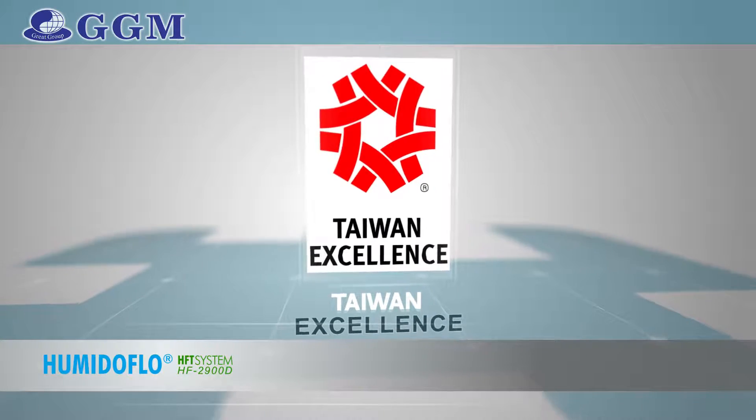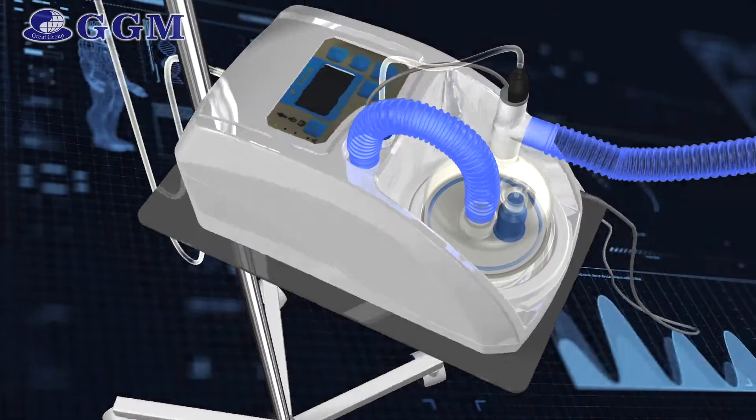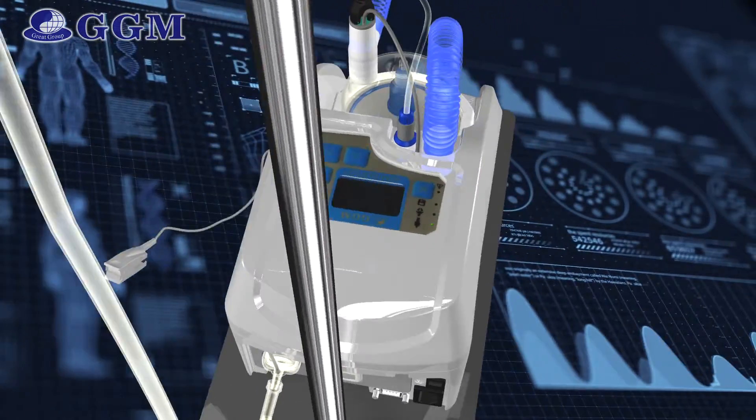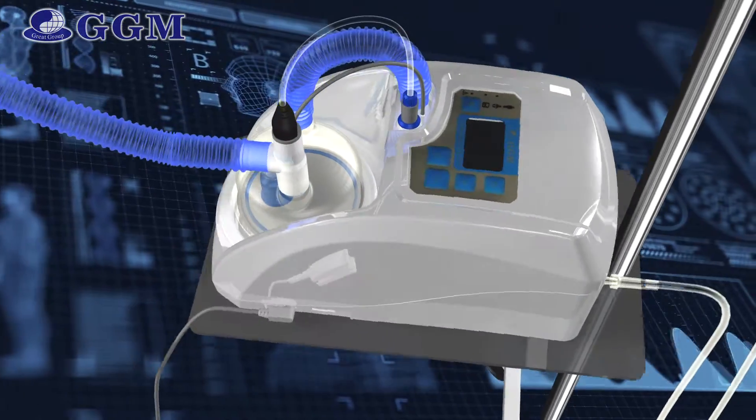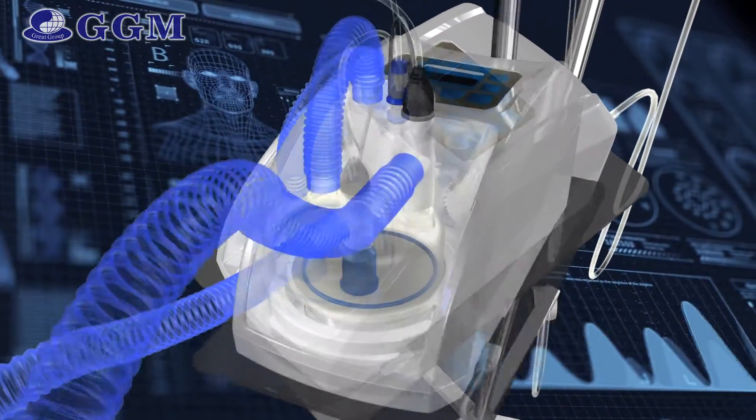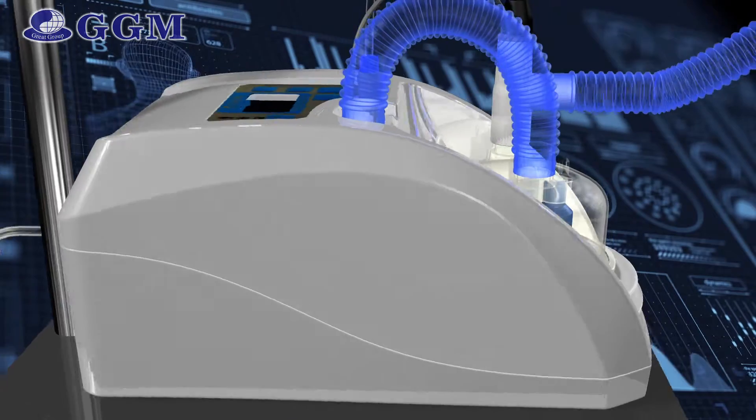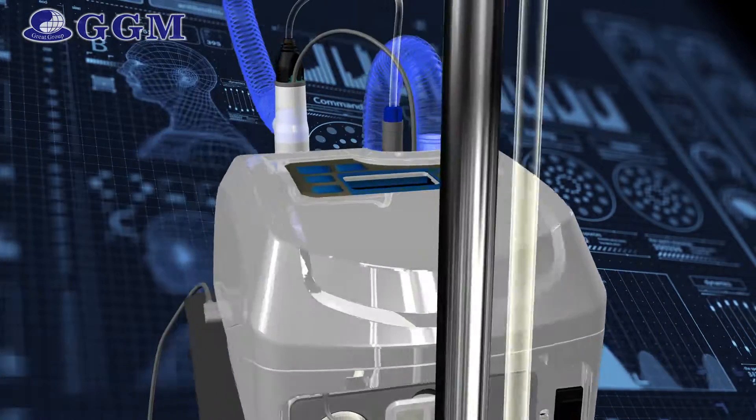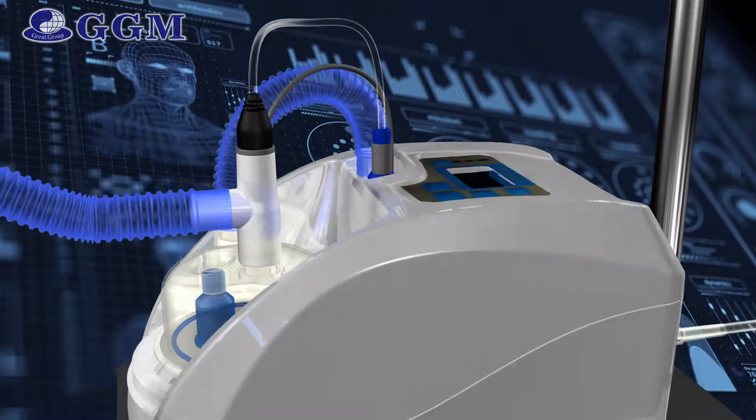This year it also qualified as a Taiwan Excellence product. The system includes Humidiflow implanted with a flow generator creating flow from 5 to 50 liters per minute, delivering blended oxygen concentration from 21% to 100%.